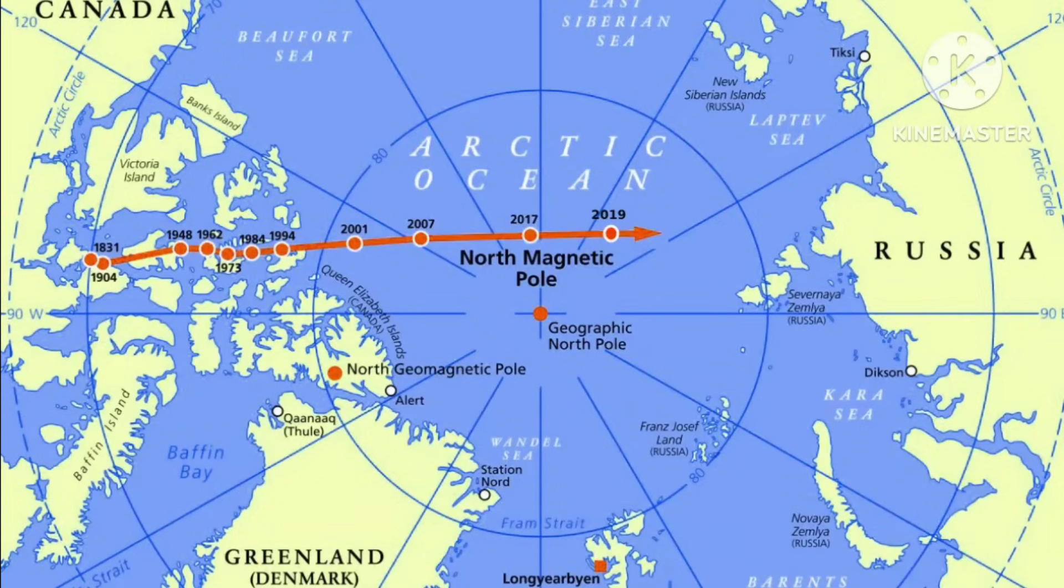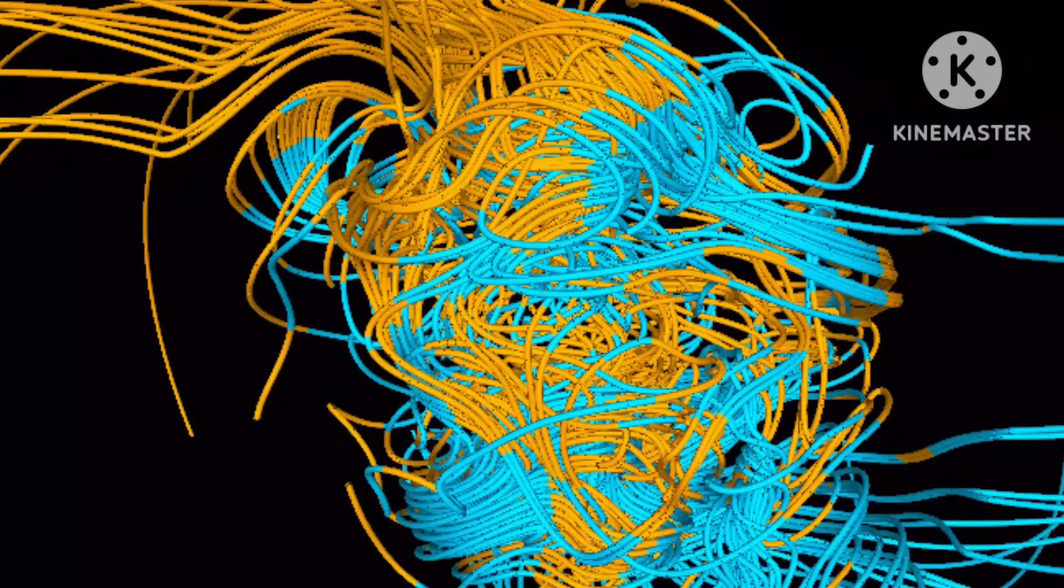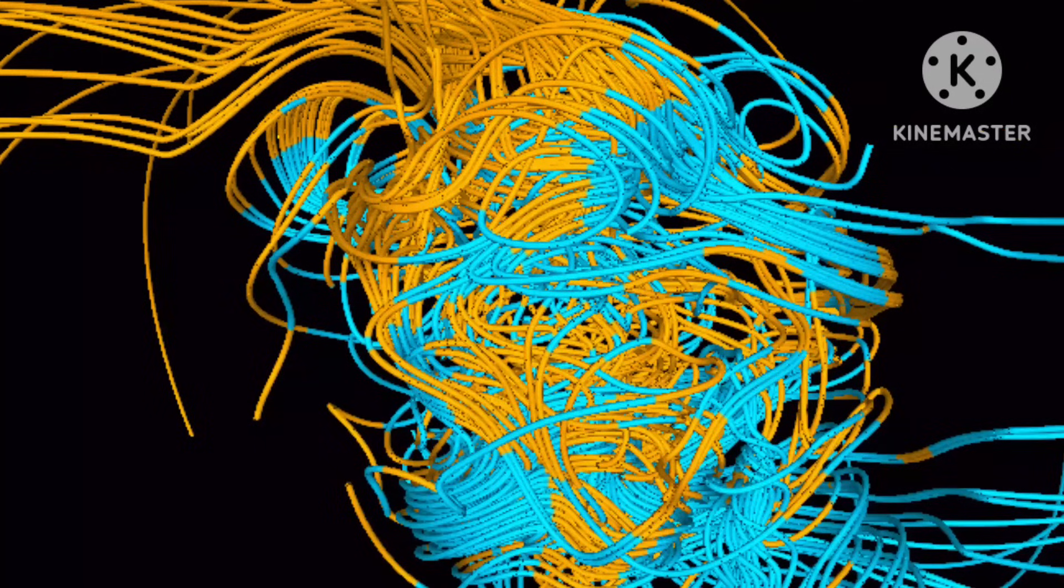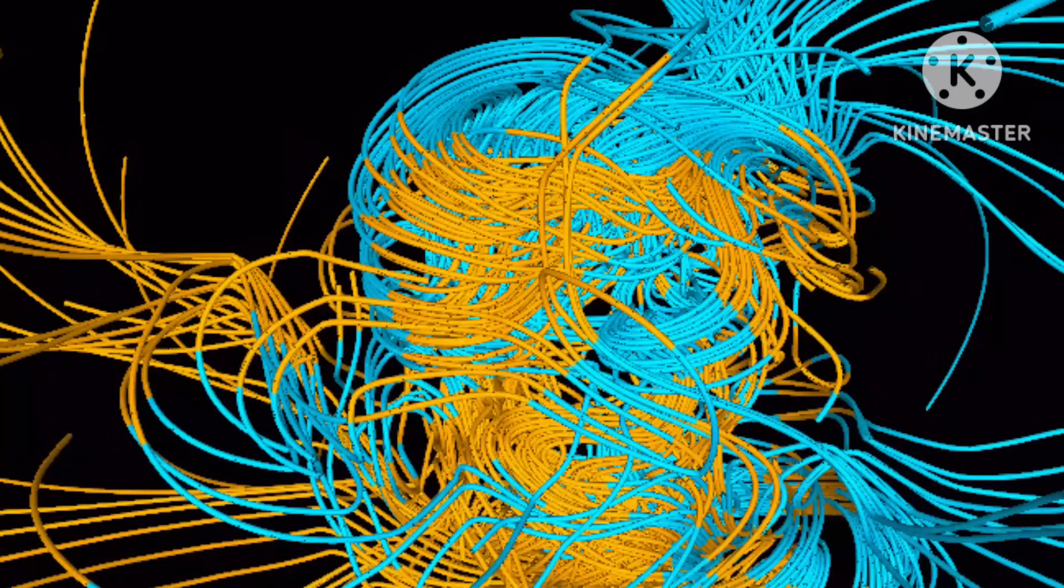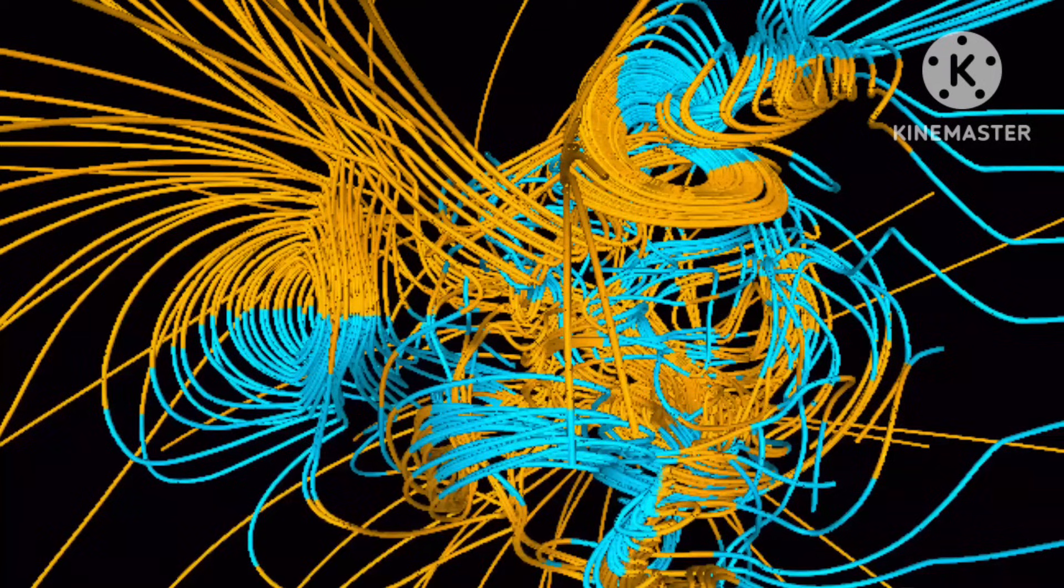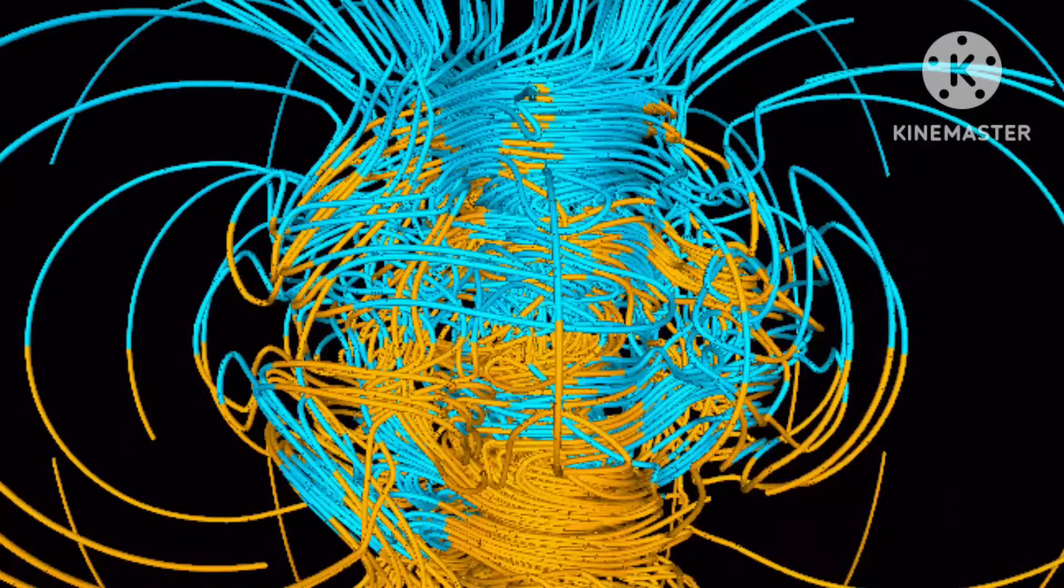While the poles are always moving around a little, sometimes the magnetic field of the Earth changes a lot and then the poles actually switch places. We call this a magnetic reversal.